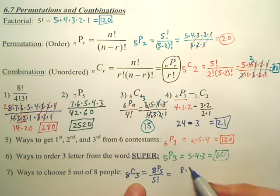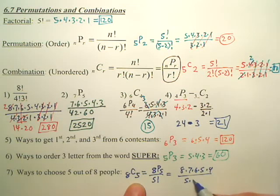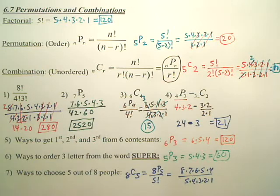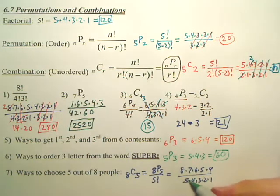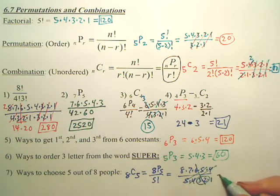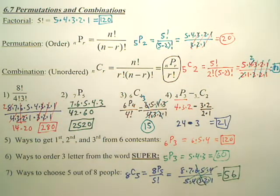Which is 8 times 7 times 6 times 5 times 4 over 5 times 4 times 3 times 2 times 1, which those cancel, those cancel. That cancels with this, leaving you 56 ways to choose five people out of eight.